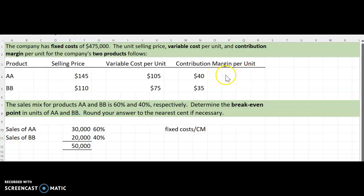So we come over here to our contribution margin per unit. And if we say that the sales of AA are 60%, 0.60, and if we say our contribution margin times 0.60 or 60%, we can find that this is $24 of contribution margin per unit.